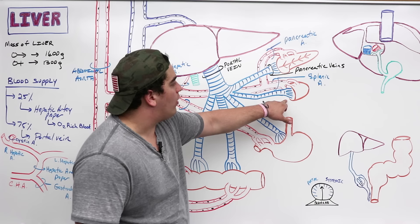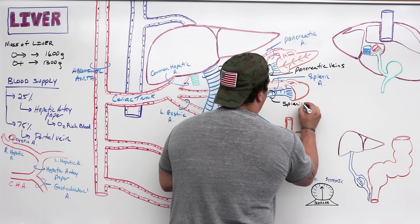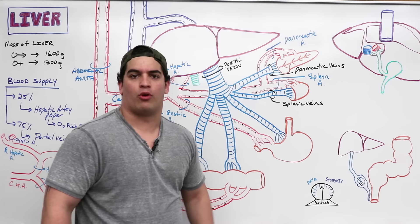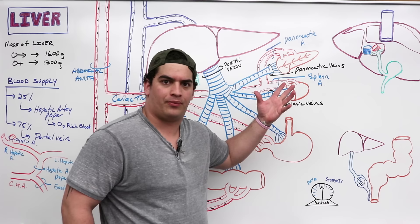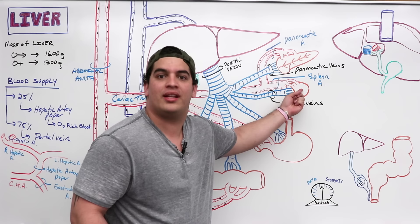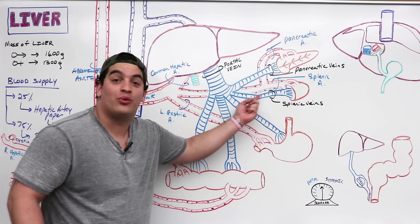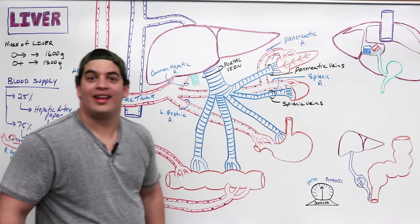Next, the splenic veins drain the spleen into the portal vein. The spleen uses its sinusoids — the cords of Billroth — to remove old or defective red blood cells. Any resulting remnants or bilirubin released via hemoglobin breakdown can get taken through the splenic veins into the portal vein and into the liver, where it can be incorporated into bile.